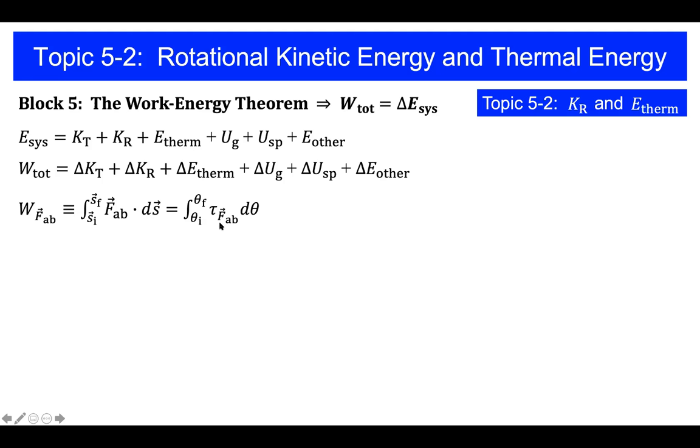In topic 5.2, we want to study the rotational kinetic energy term and the thermal energy term in more detail. Rotational kinetic energy of an object that has moment of inertia I and angular speed omega is given by the equation 1 half I omega squared.